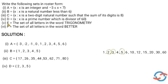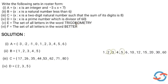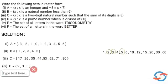Next is E, which is equal to the set of all letters in the word TRIGONOMETRY. The word has 12 letters, but since letters repeat, in a set we do not repeat elements.